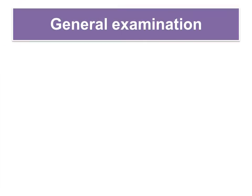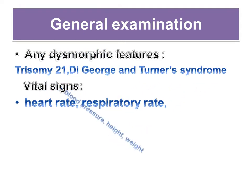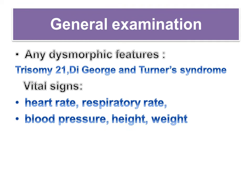Always ask this question to the parent: are you related to each other? Before starting any physical exam, ensure that your hands are properly washed. Observe the body's habitus, noting any dysmorphic features that may indicate a syndrome associated with congenital heart disease. Common examples would include Trisomy 21, DiGeorge and Turner syndrome.